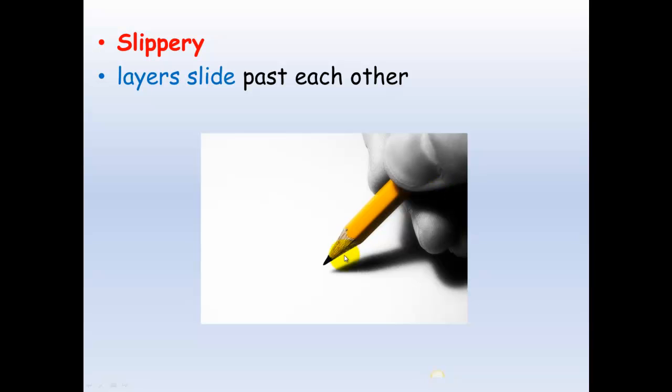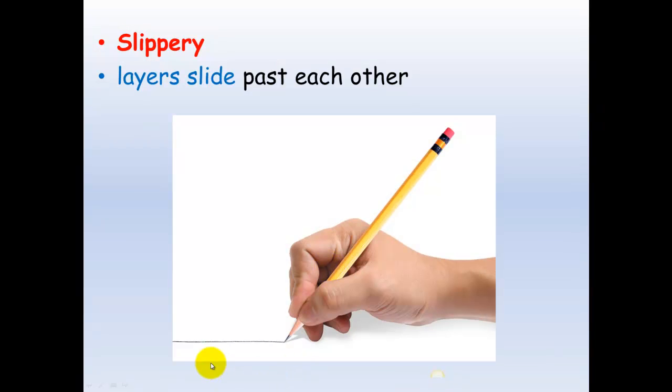So, you see that with the graphite in a pencil. When you're drawing a line on a piece of paper, what you're actually doing is you're leaving a layer and then you're leaving another layer. You're breaking the dispersion forces and you're leaving a layer of these covalently bonded carbon atoms behind on the paper. It is only these weak dispersion forces that you are breaking.